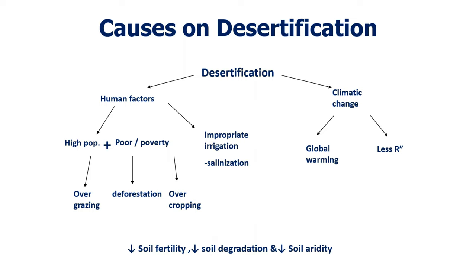Another major factor is climate change, which impacts every sector of the world. Global warming increases temperatures, causes receding water bodies and groundwater levels, and converts vegetated land into desert. Climate change also causes erratic or reduced rainfall and precipitation. In the long term, this reduces soil moisture, and the soil becomes vulnerable to wind erosion, shifting from one place to another since there is no vegetation, no mulch, and no cover on the soil.